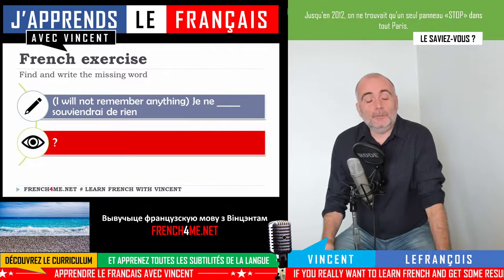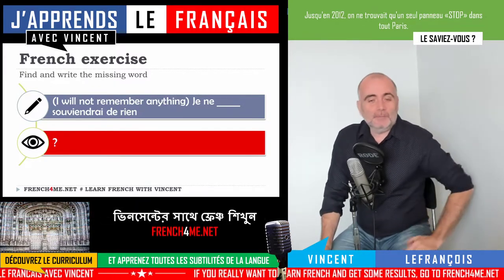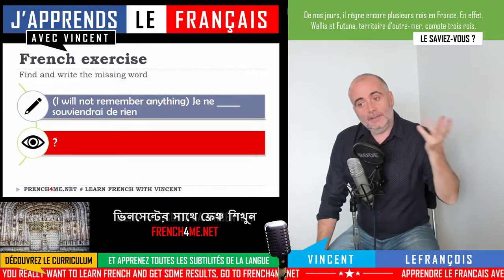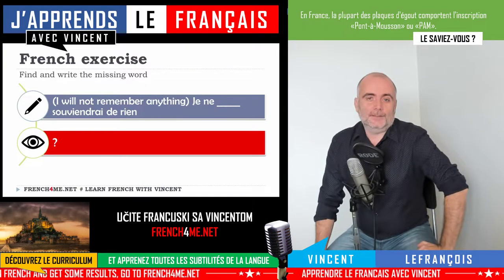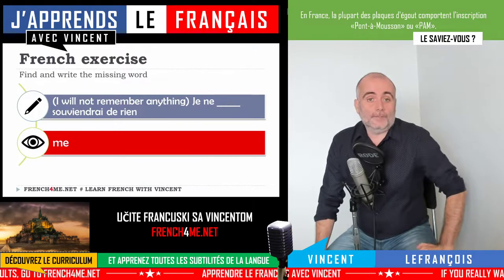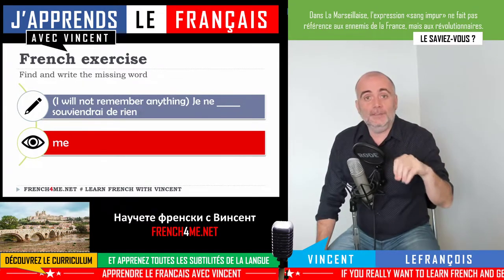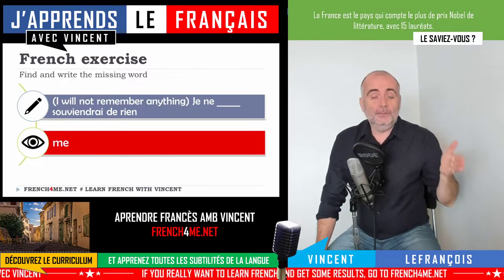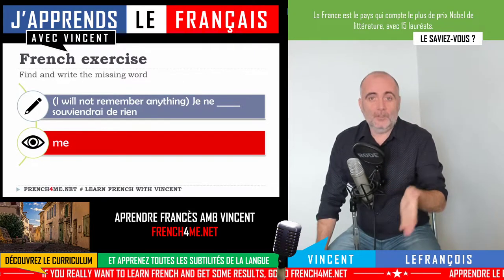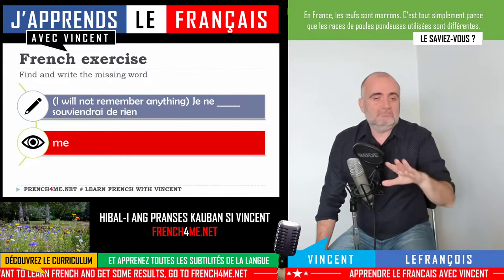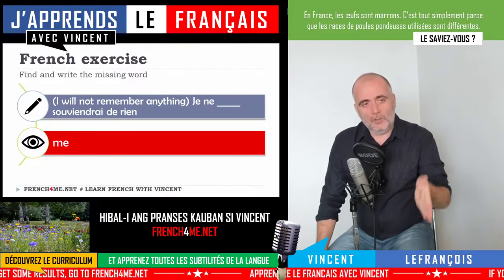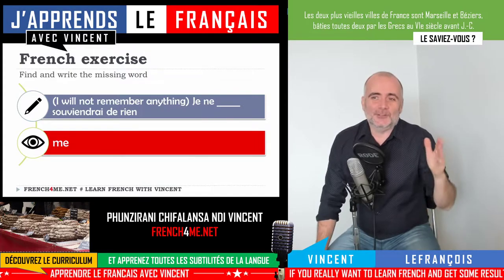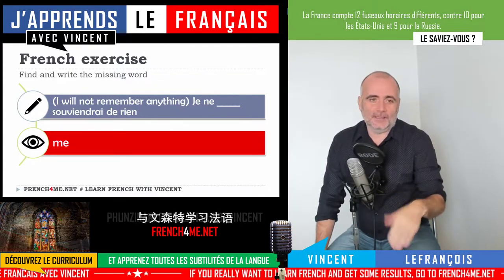Next one: 'I will not remember anything' — 'je ne... souviendrai de rien'. So what could be missing? The missing word is the pronoun, because the verb is 'se souvenir', a pronominal verb. So when you conjugate it, you need 'je me souviens'. In the future, it doesn't impact the structure: 'je me souviendrai'. And I wanted to trick you with a little negative form: 'je ne me souviendrai de rien'.